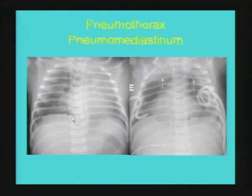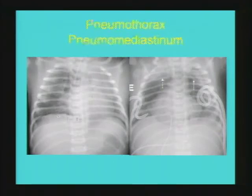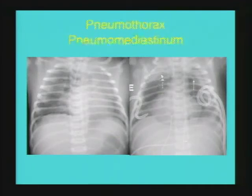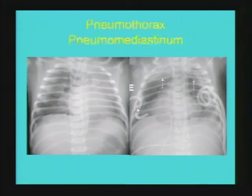This is an example of subtle pneumothorax on the right side, manifested as a deep right sulcus sign, sliver of air in the subpulmonic pleural space, and loculation of pneumothorax in the anterior mediastinum with generalized lucency of the right lung compared to the left. This is an example of pneumomediastinum manifesting as lucency overlying the mediastinum and displacement of the thymus above the cardiac silhouette. It is important to differentiate pneumomediastinum from pneumothorax, as pneumomediastinum resolves spontaneously and does not need drainage.